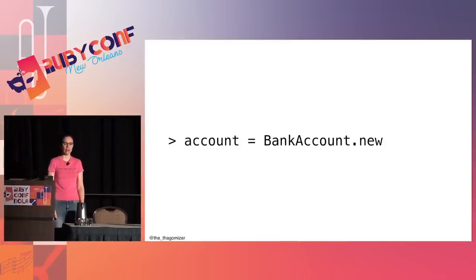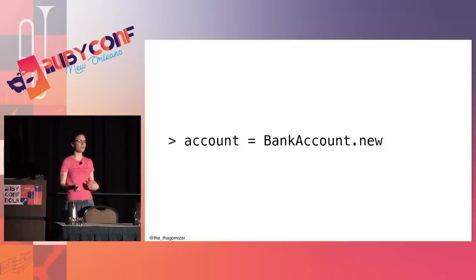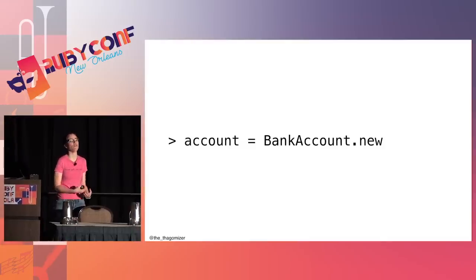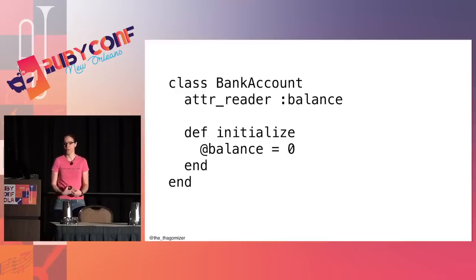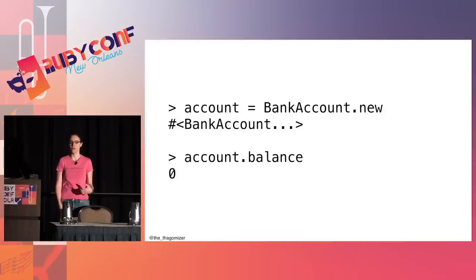In IRB I can call BankAccount.new and get an account object back. I know my balance is zero, but I can't actually see it, so I'll write an accessor — an attr_reader — because I don't want anyone outside to be able to set the balance. Back in IRB, now I can see my balance: it's zero.